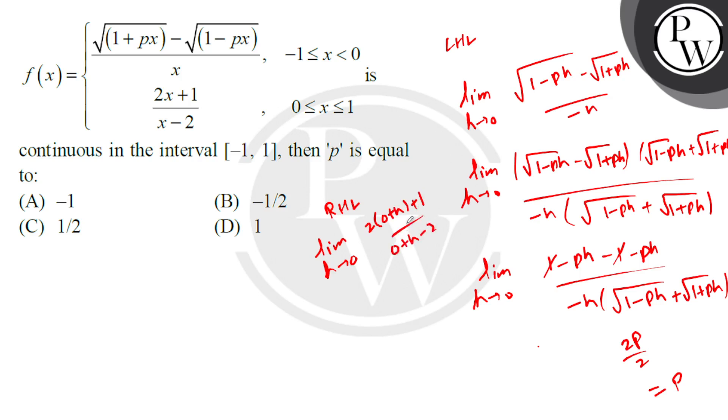so here we have this value as -1/2, and that equals p. So the correct option is option B. I hope you understood well, best of luck, thank you.